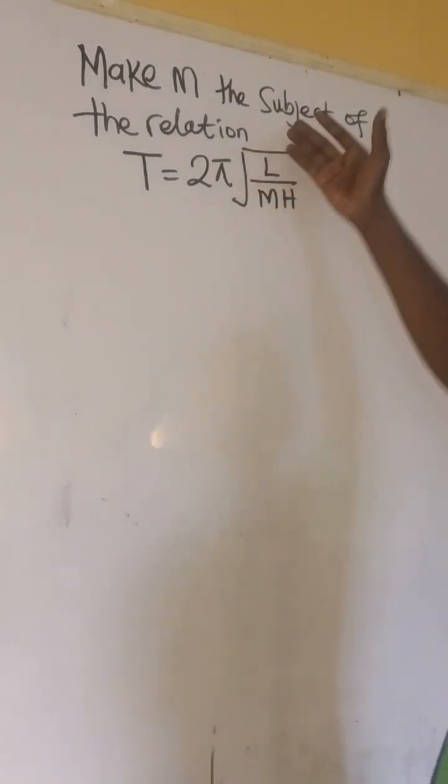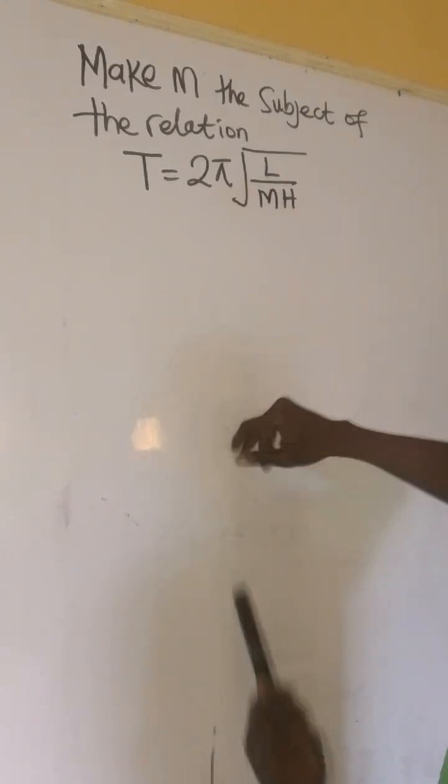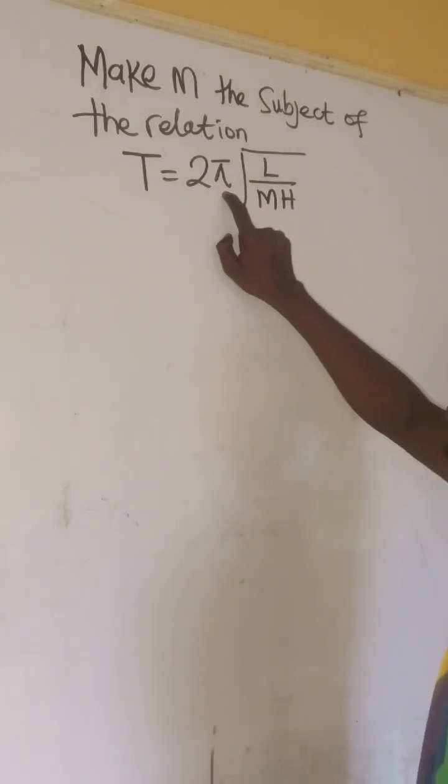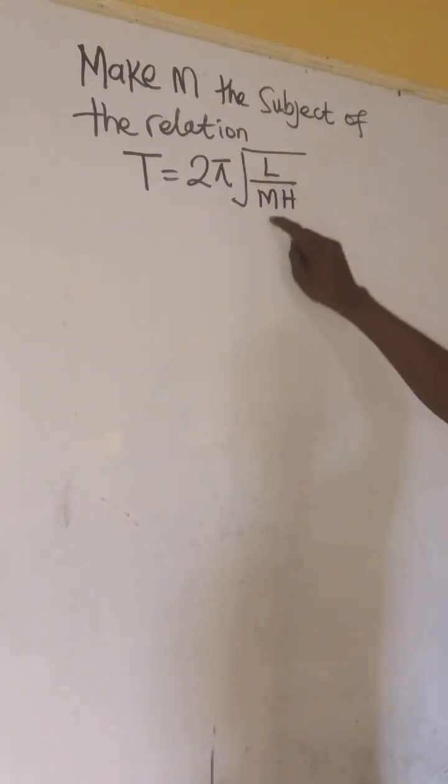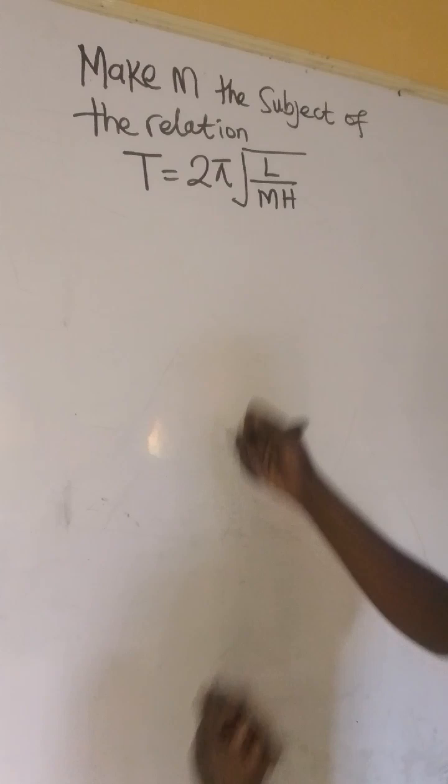The question says make m the subject of the relation T = 2π√(l/mh). Now how do we solve this question?